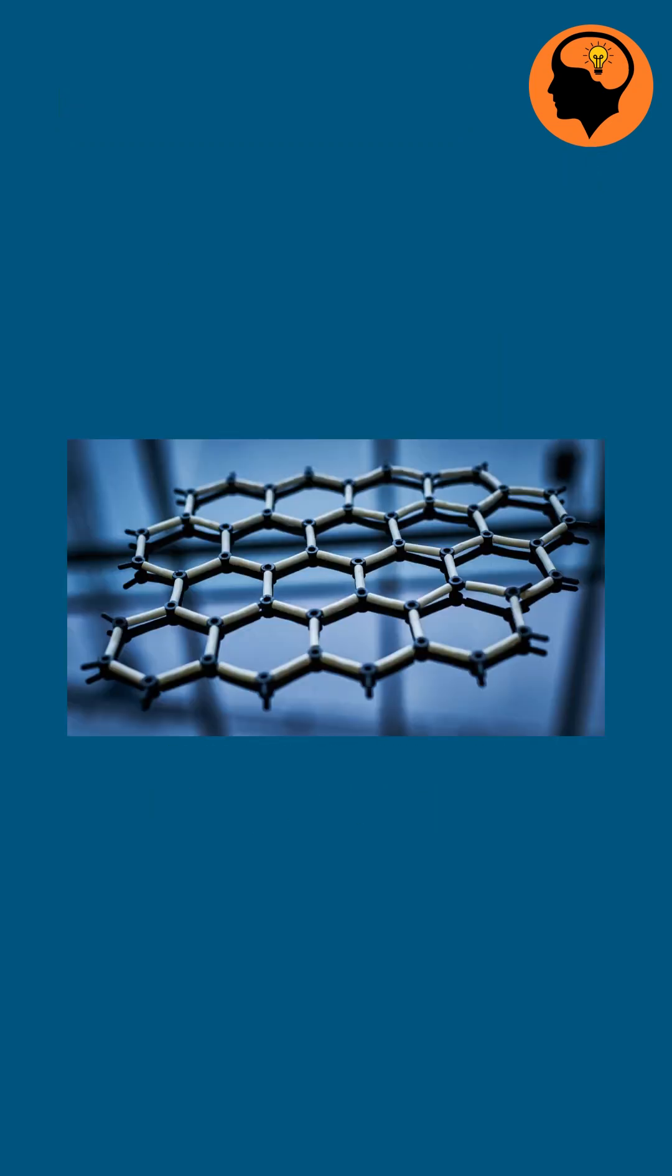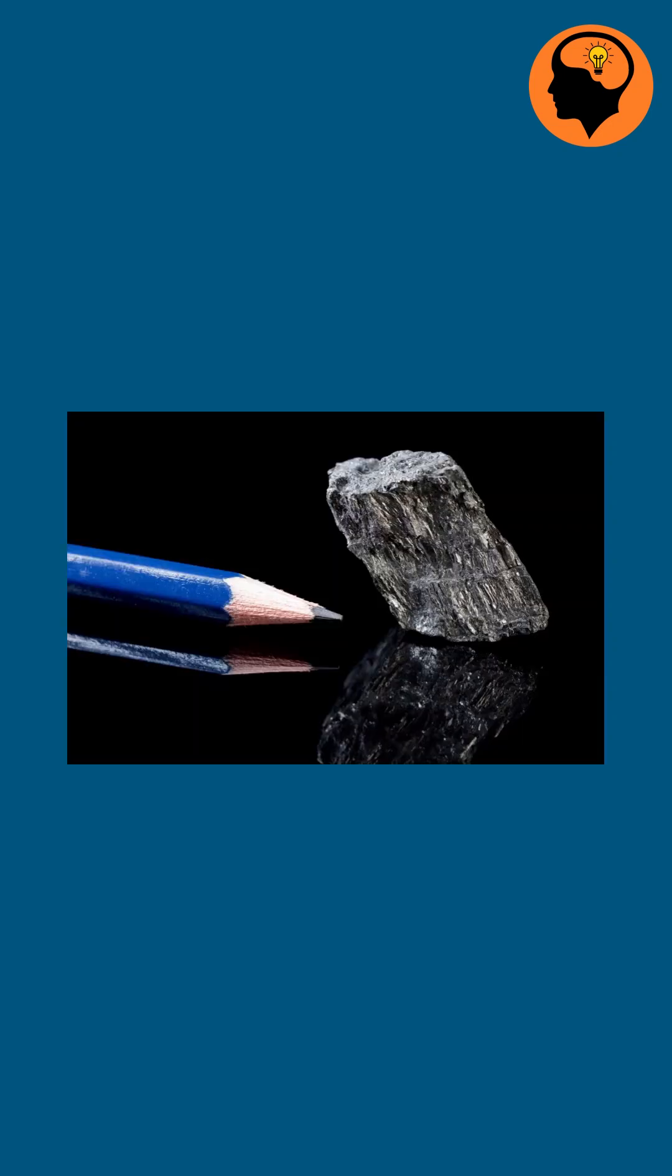In 1947, a Canadian physicist, Philip R. Wallace, first studied graphene's electronic structure while researching graphite.